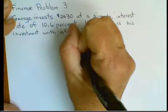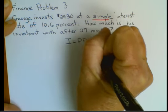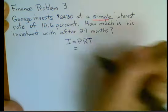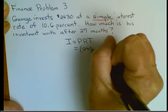We will need the formula I equals PRT. P is our principal, so $2,430.